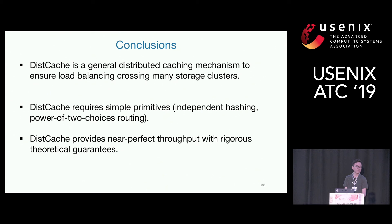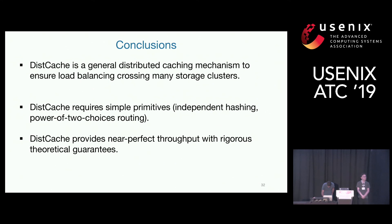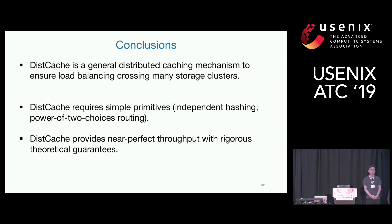A question: if you want to generalize for network latency or fault tolerance — for example, ensuring data is replicated properly so that if one node crashes you can recover — is it possible to adjust the hashing function to reflect that? We actually have a fault tolerance function in DistCache, but we don't need to adjust the hash function. We just use a kind of chain replication across the switch nodes, and we can guarantee that failures of one or two nodes are handled fine.